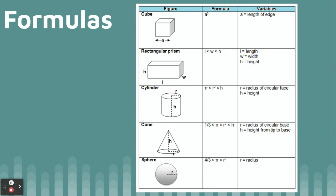For a rectangular prism, you need length, width, and height, and you take length times width times height. You'll notice the volume formula is similar to the area of one of the sides — area of a side is length times width. When you add in multiplying by the height, that's how you get the inside space it can hold.